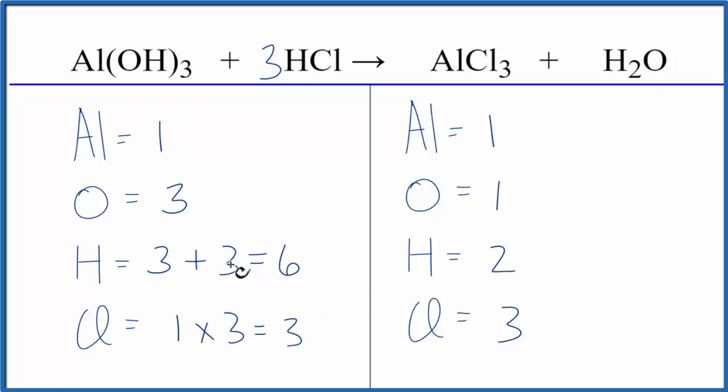We could fix the hydrogens pretty easily by putting a three in front of the H2O, because two times three, that gives us six. So that balances the hydrogens, and the three applies to all of the atoms here in water. So we have the one oxygen times the three, which is nice because now the oxygens are balanced as well.